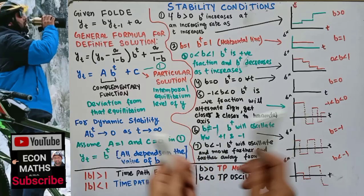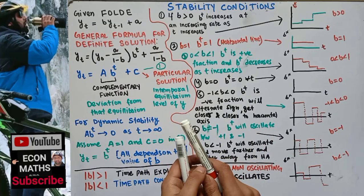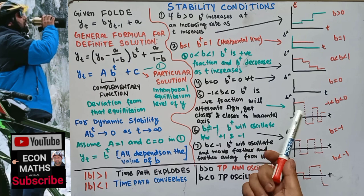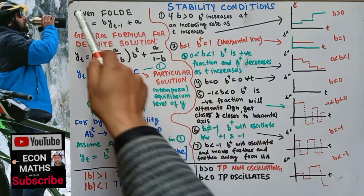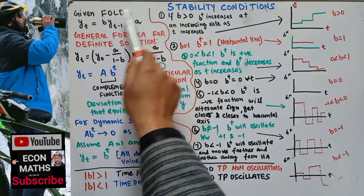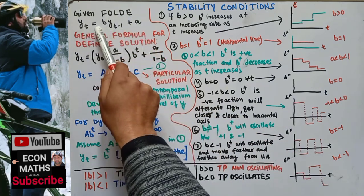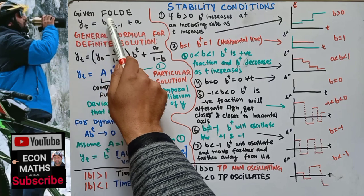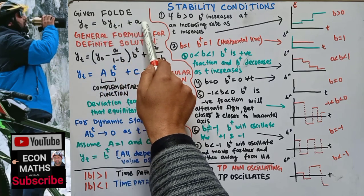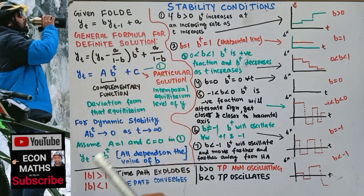Let us revise the earlier video on stability conditions of first-order linear difference equations. Given a first-order linear difference equation in the form: y_t equals b·y_{t-1} plus a, where a and b are constants.